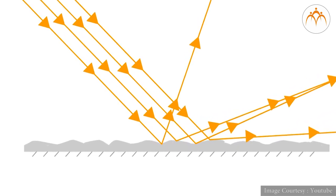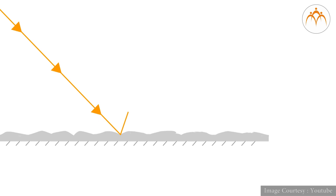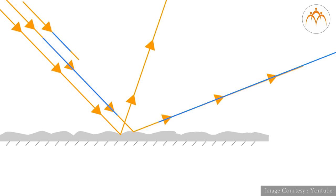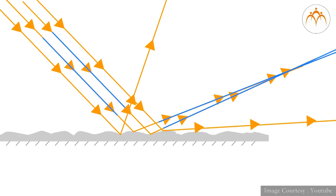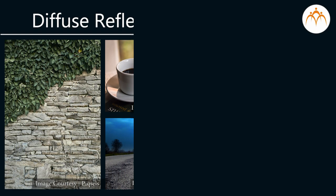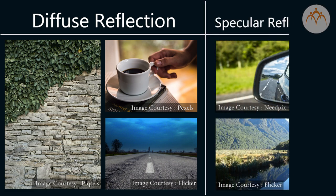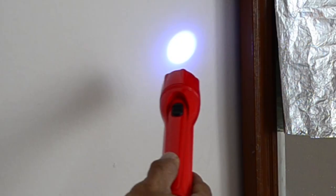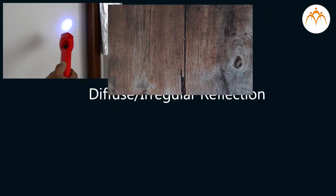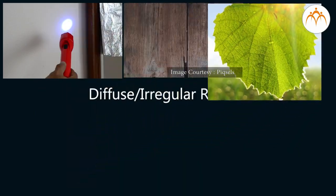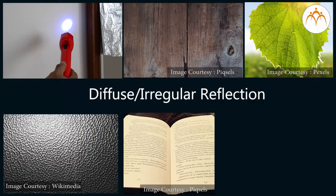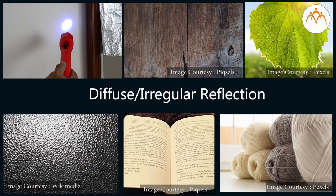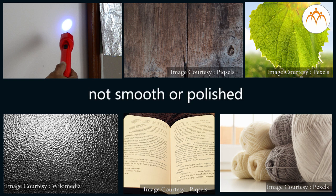In the case of irregular reflection, incident parallel rays are reflected at different angles after reflection and are no longer parallel. Irregular or diffuse reflection takes place when the light rays are incident on surfaces such as a wall, wood, a leaf of a tree, a piece of leather, a piece of paper, or a piece of wool — which are not smooth or polished.